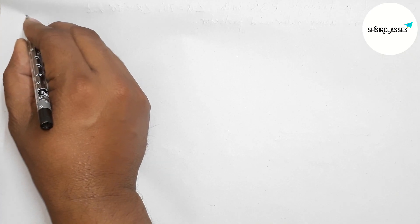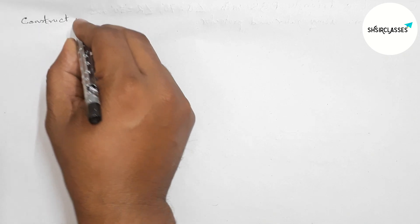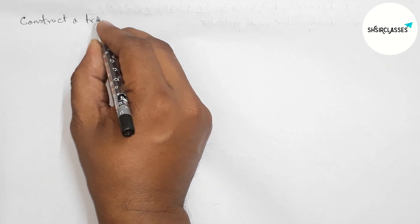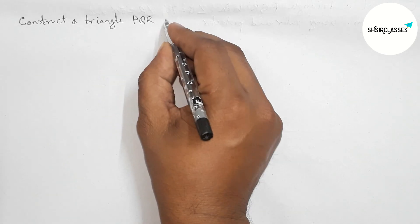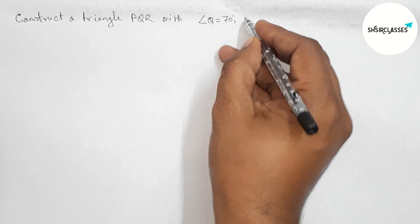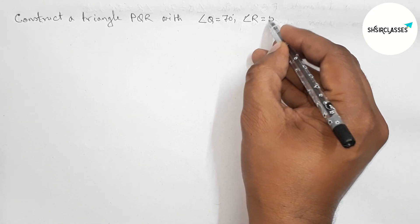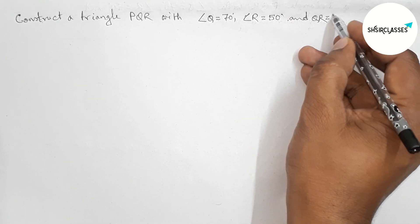Hi everyone, welcome to Essay Share Classes. Today in this video, we'll learn how to construct a triangle PQR where angle Q is 70 degrees, angle R is 50 degrees, and one given side QR is 7 centimeters in an easy way. So let's start the video.